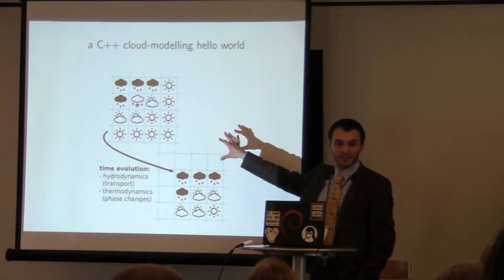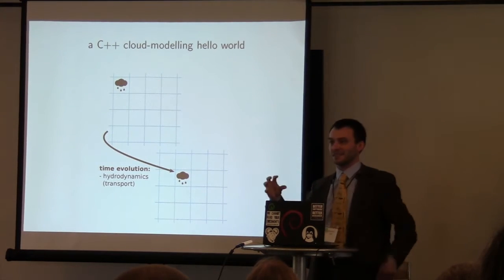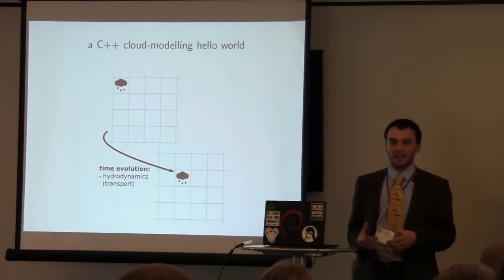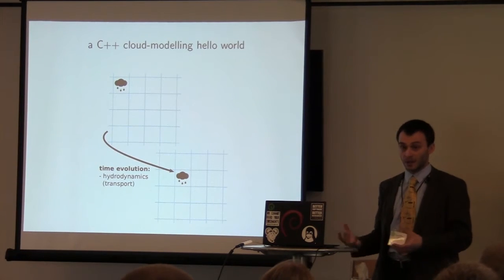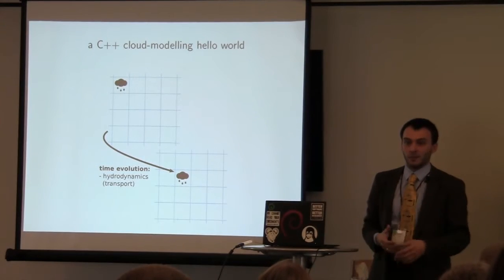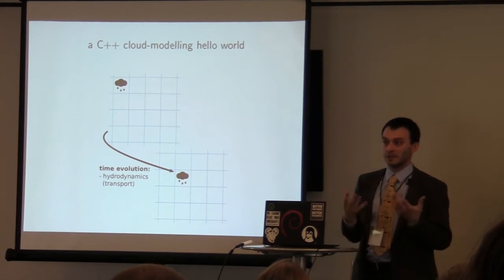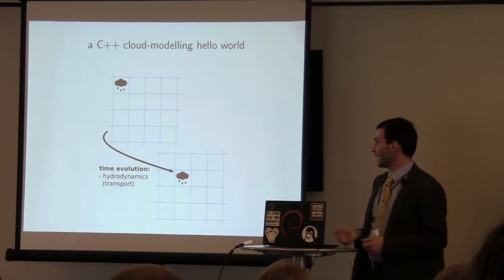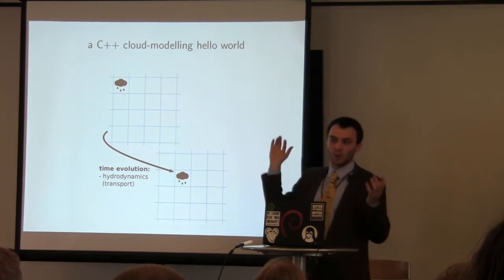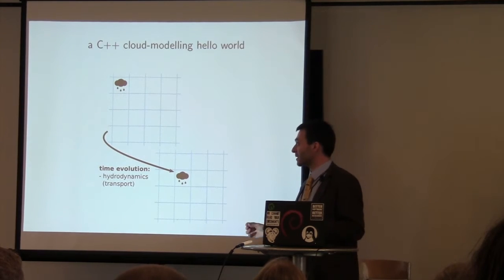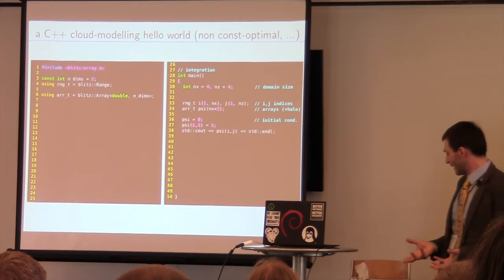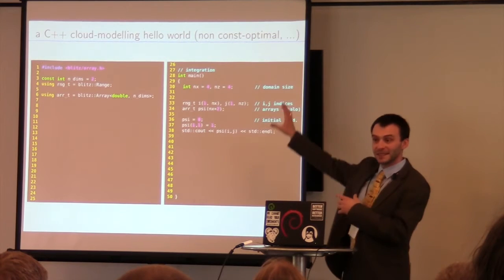So, before I begin describing the libraries we developed, I'll try to spend some time to explain what kind of coding we are doing and what kind of problems, how the problems I mentioned look from a coding perspective. Let me try to show a kind of 50-line hello world for cloud modeling. I mentioned this picture, that's the conceptual problem, and I will just shrink it to an even more simple problem, that is the transport of air. We need to solve equations, partial differential equations, for transport of fluid in the atmosphere.